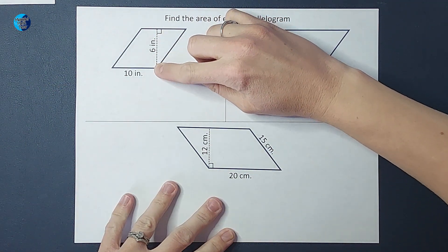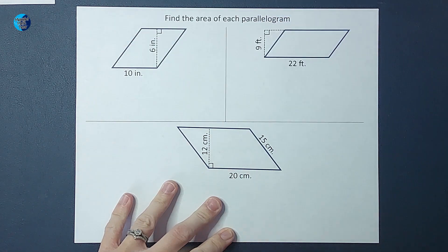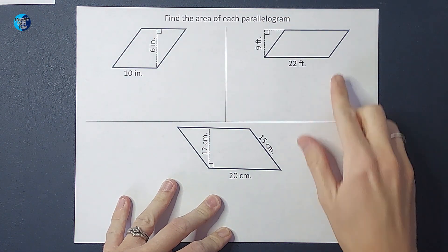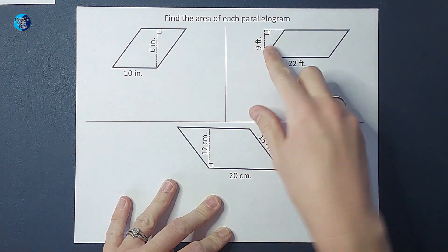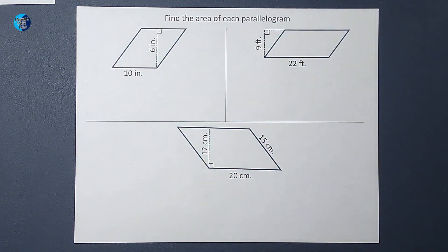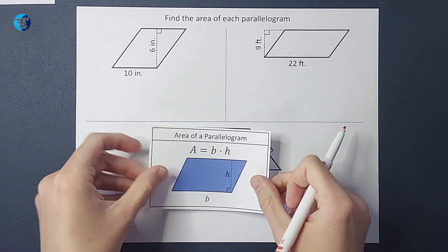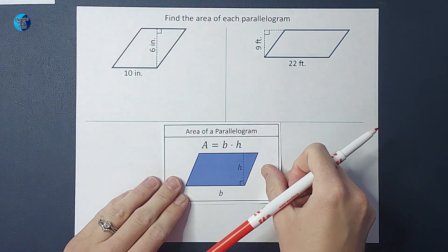You can kind of picture it here. If we were to cut this off here and put it right there, they would make a rectangle. Same over here, if we were to cut this off, that kind of makes a triangle, and put it there, it would be a rectangle. So it's really just kind of a rearranged rectangle. Alright, so I am going to take each of these and multiply the base times the height.